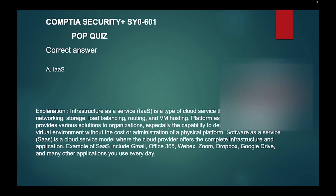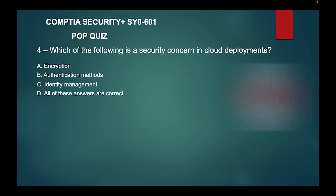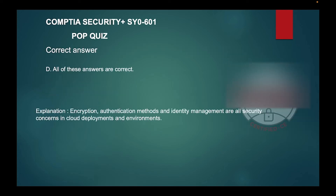Question four: Which of the following is a security concern in cloud deployment? A) Encryption, B) Authentication methods, C) Identity management, or D) All of these answers are correct. The correct answer is D — all of these answers are correct. Encryption, authentication methods, and identity management are all security concerns in cloud deployments and environments.